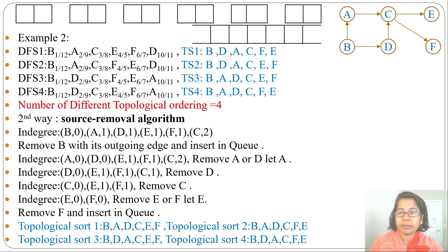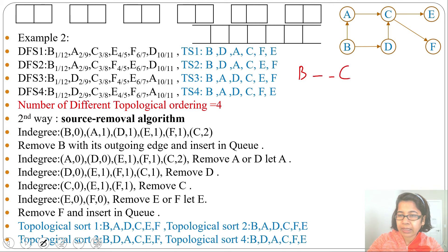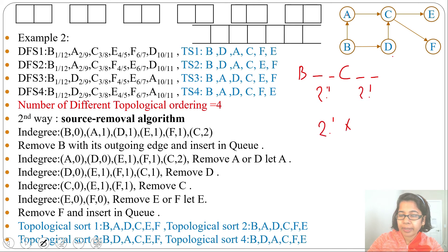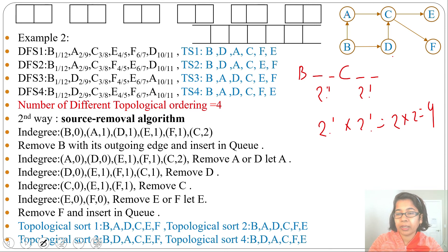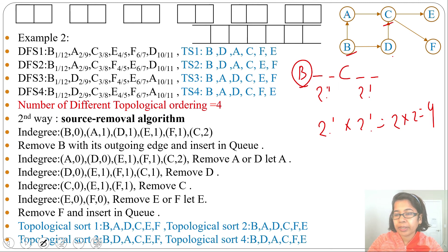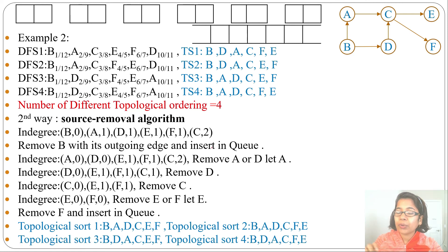Other methods can also find the number of topological orderings. B is always first, then A and D can be switched, then C is fixed, then E and F can be switched. A and D can be arranged in 2! ways and E and F can be arranged in 2! ways, so 2! × 2! = 4. By combinatorics we also find there are four different topological orderings.